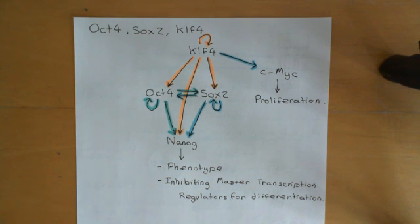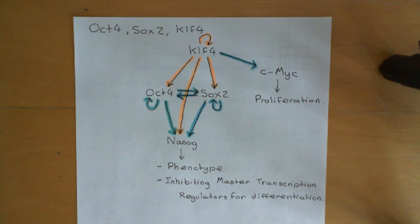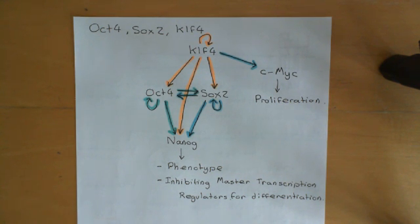The way this works is that you have this combination of master transcription regulators, which is self-perpetuating — it maintains its own expression. Then, through the alteration of the expression levels of downstream transcription regulators, it can influence a much wider jurisdiction of genes and eventually control the entire genome, and hence the transcriptome, proteome, and phenotype of the cell.